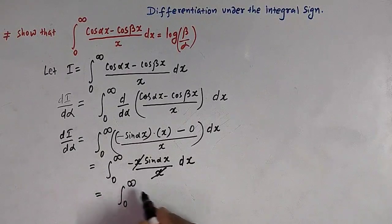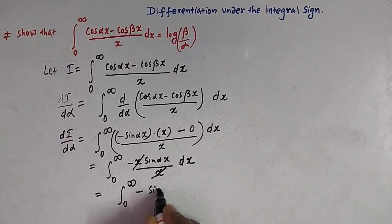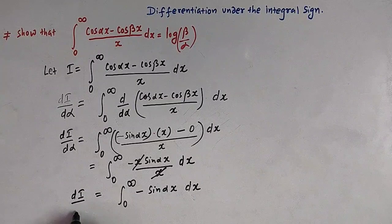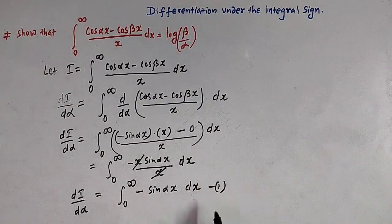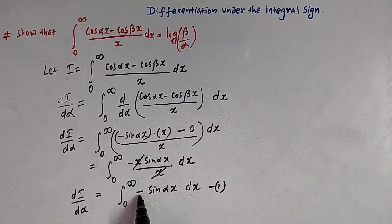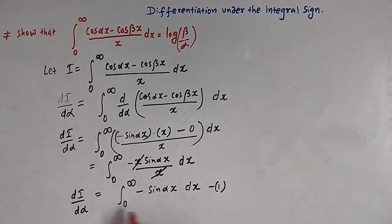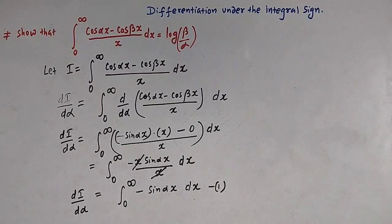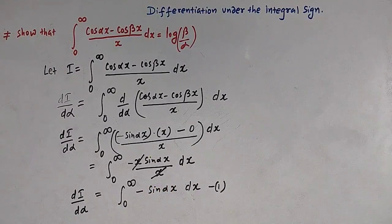So we have the integral from 0 to infinity of (-x sin αx) divided by x dx, and this x and x get cancelled. So we are left with the integral from 0 to infinity of -sin αx dx. So we have obtained dI/dα equal to the integral from 0 to infinity of -sin αx dx. To move further, we will make use of Euler's formula.